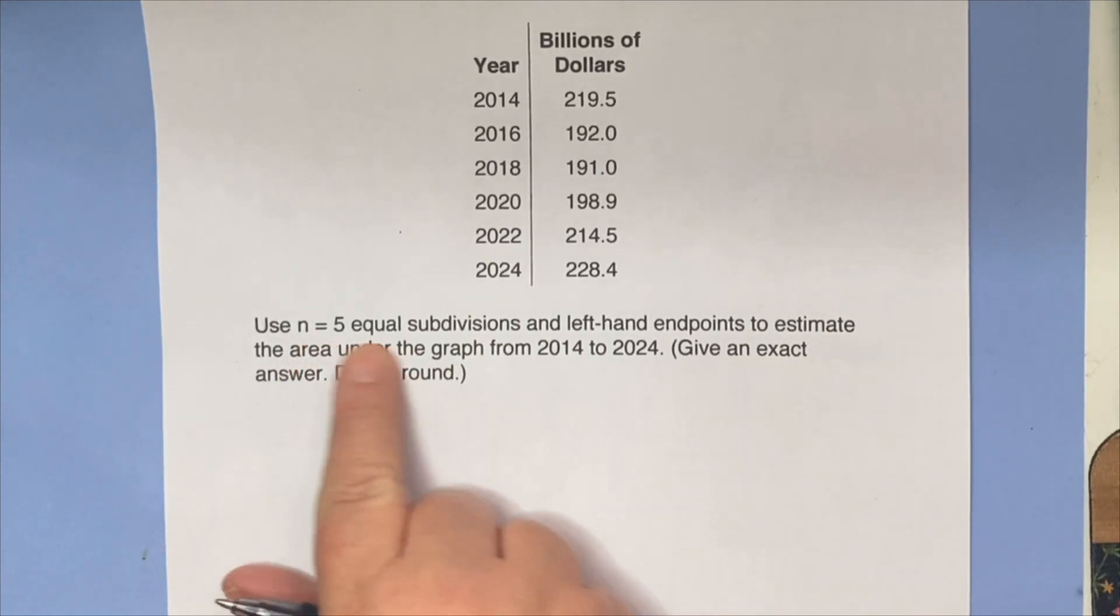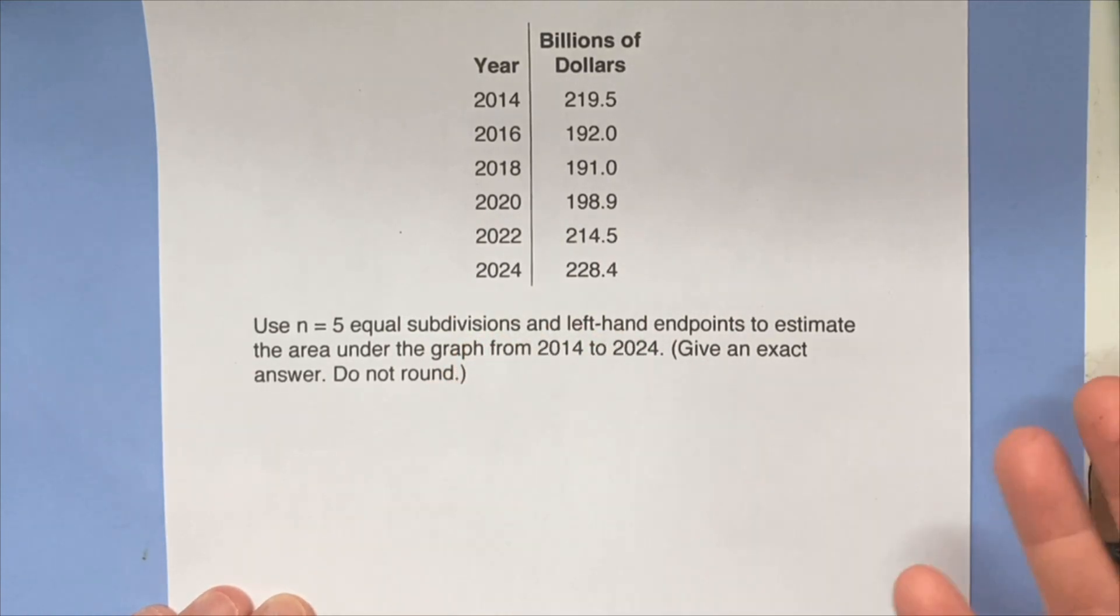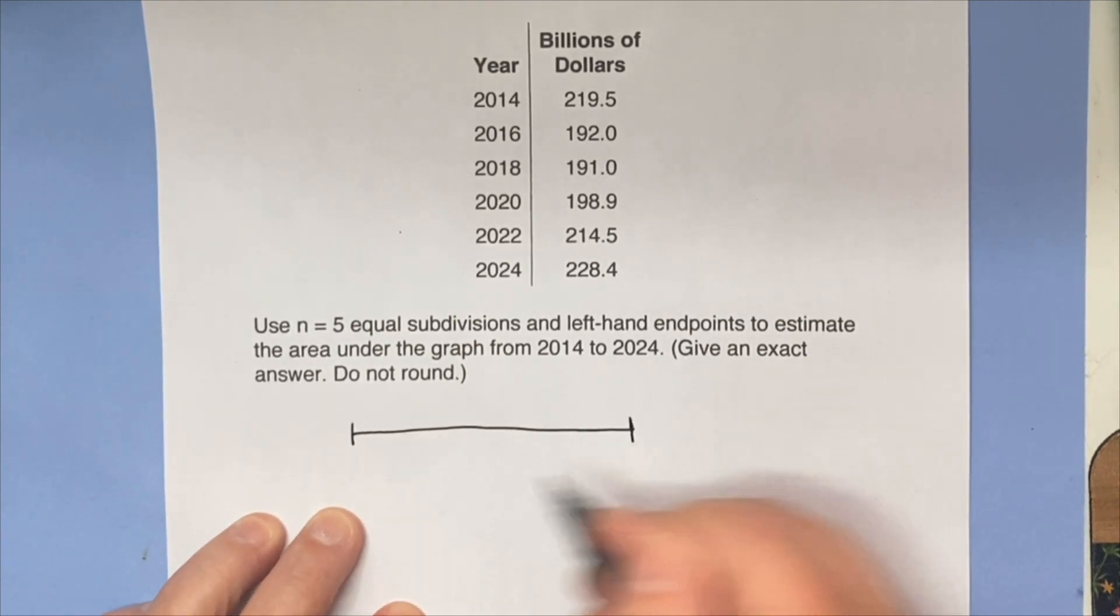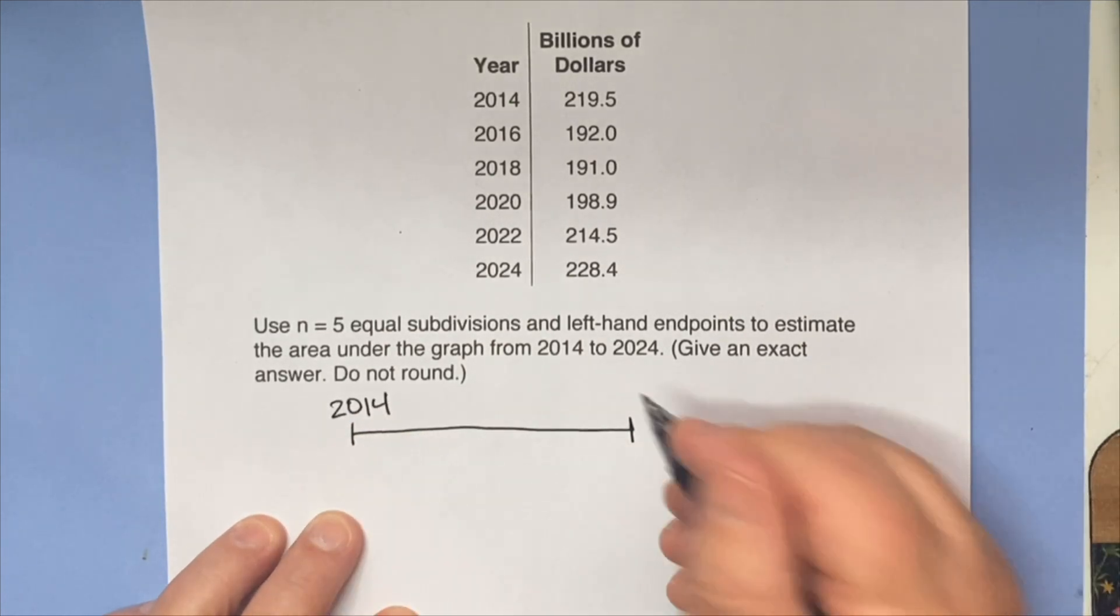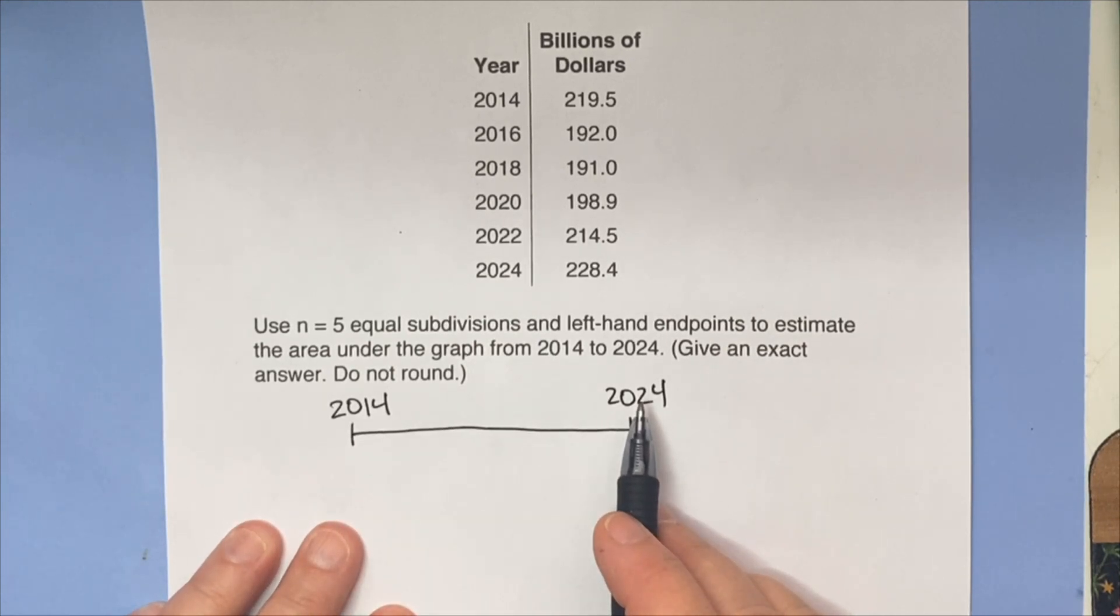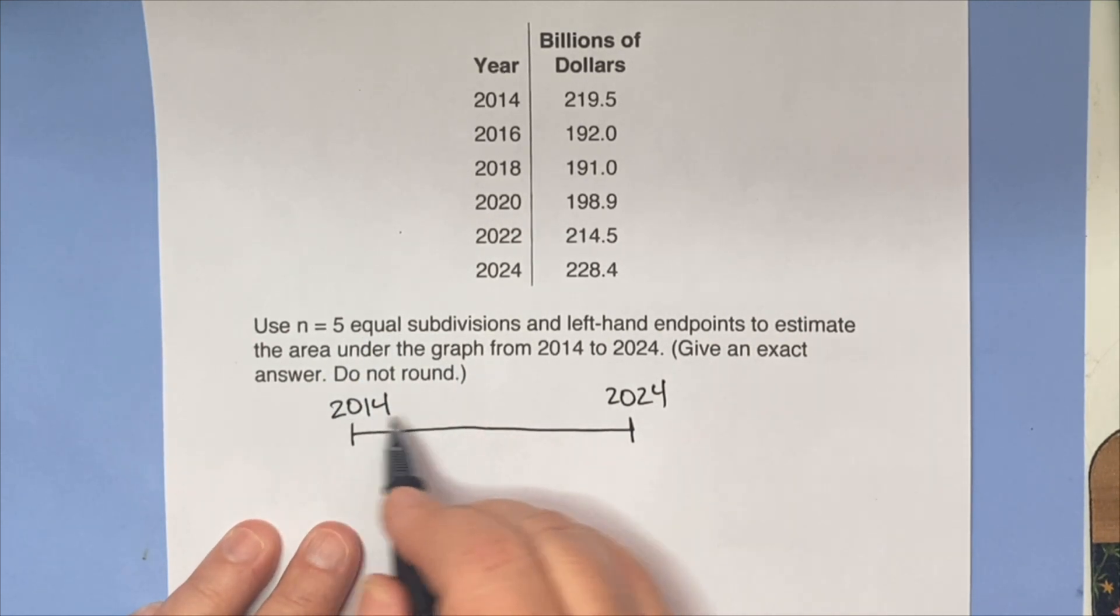So let's talk about how we can do this. We're going to use five equal subdivisions. So we're going back to that graph we were working with before, except we don't even have a graph. We just have a table of information. And we're going to use left-hand endpoints to estimate the area under the graph from 2014 to 2024.